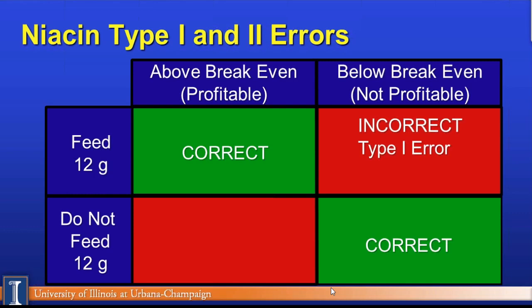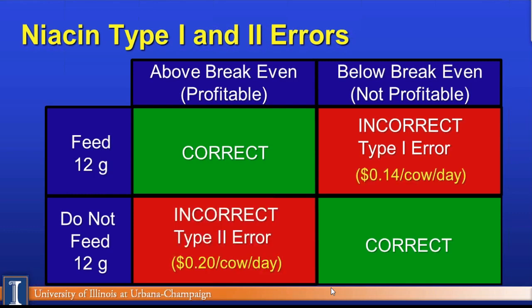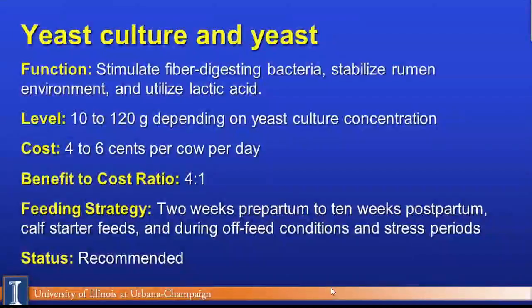Looking at the niacin Type 1 and Type 2 error economic profile, you see a totally different profile — almost trading dollars. If you didn't feed it, you'd save about 14 cents; if you did feed it and cows responded, it was worth about 20 cents. As a dairy farmer or consultant, this is the kind of information you base your decisions on.